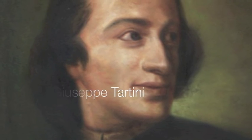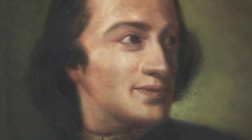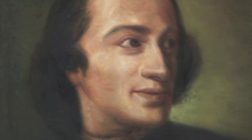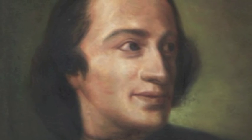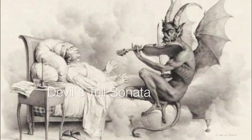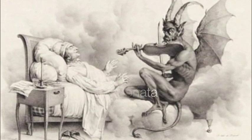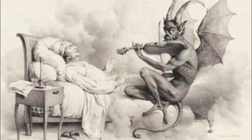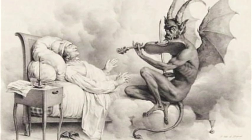It all started with Tartini. He was an Italian Baroque composer and violinist, most well known for this song, Devil's Trill Sonata. In 1726, Tartini started a violin school, became a consumed music theorist, and was credited with the discovery of difference tones. He published his observations in 1754.